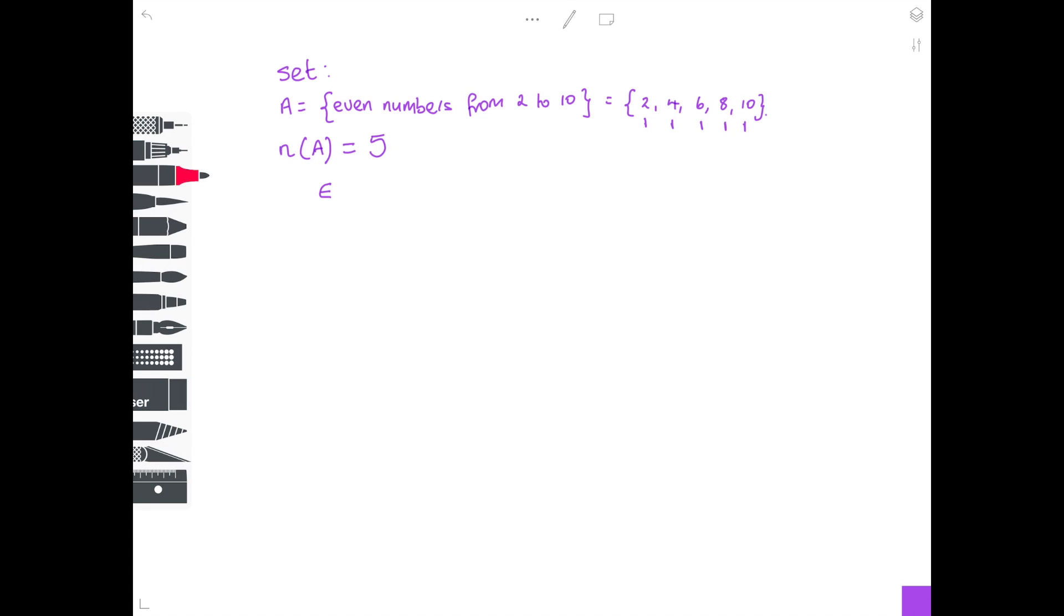So for example, I could say 4 is an element of the set {2, 4, 6, 8, 10}, because indeed 4 is in that list of numbers. But 5 is not in that list, so you just put a line through the symbol. 5 is not an element of the set {2, 4, 6, 8, 10}.